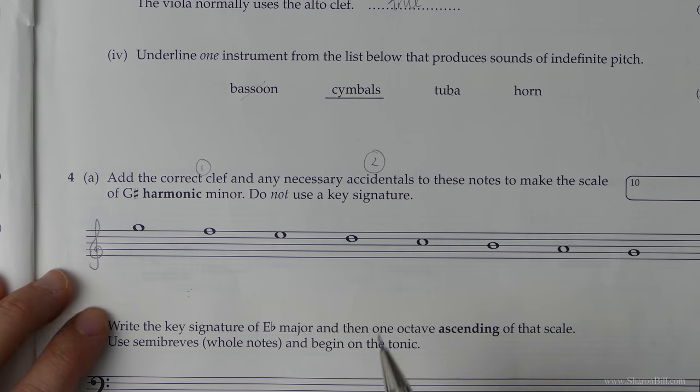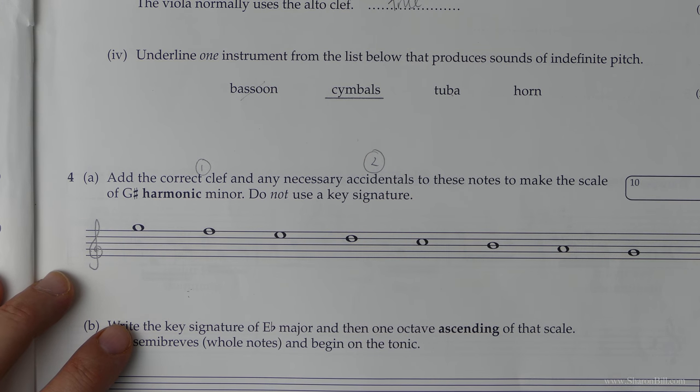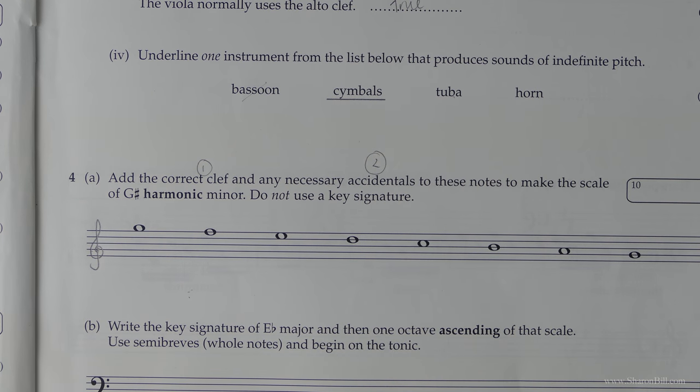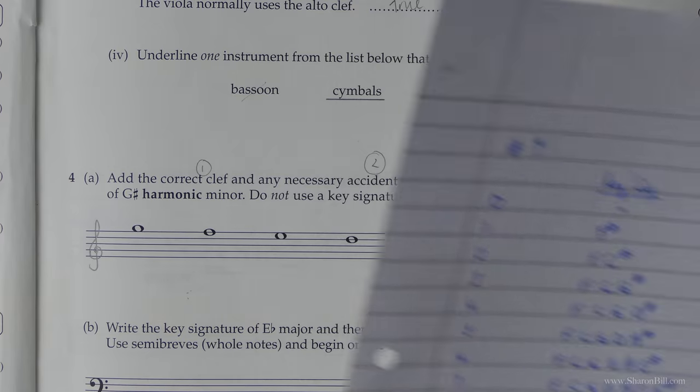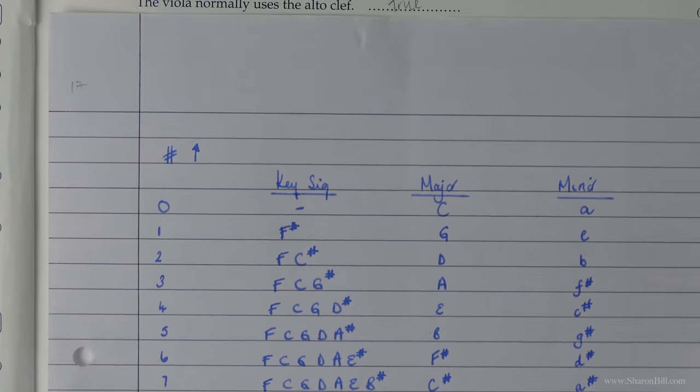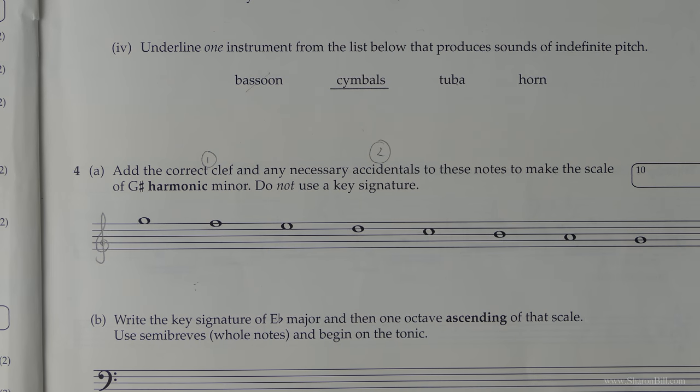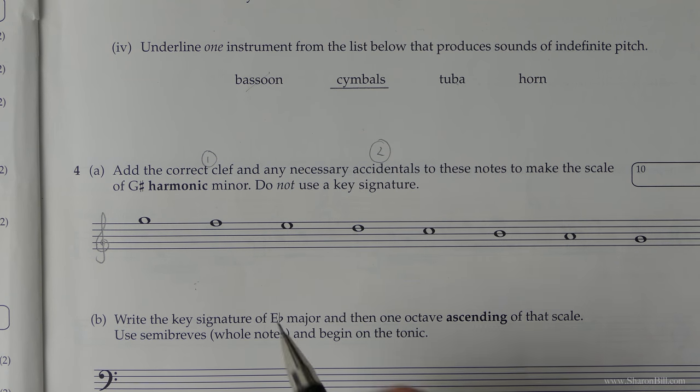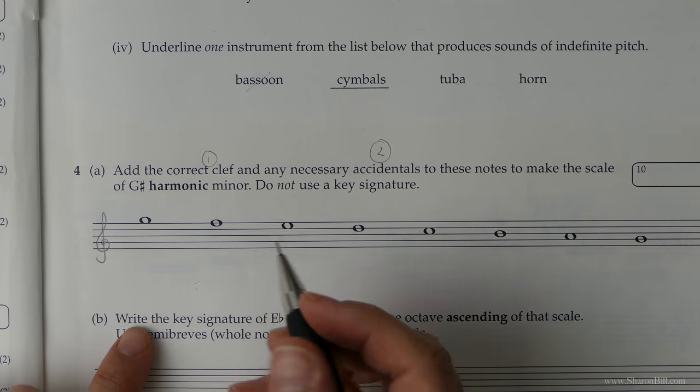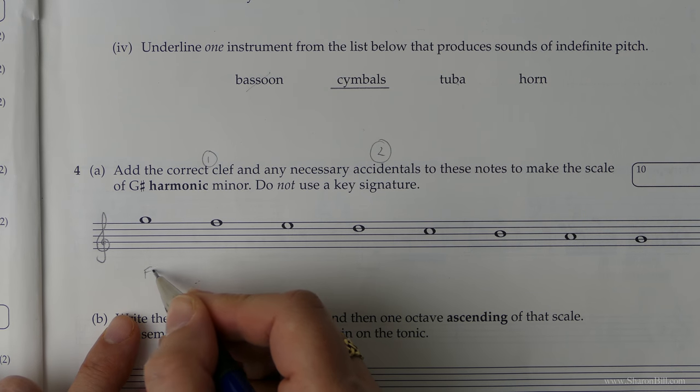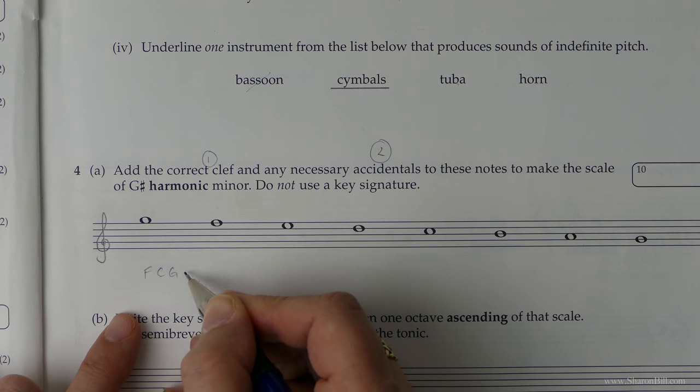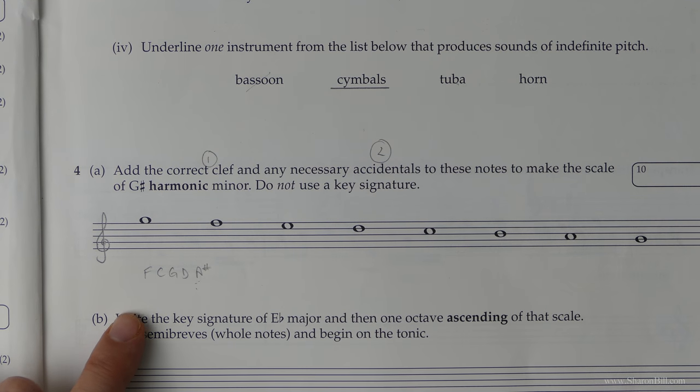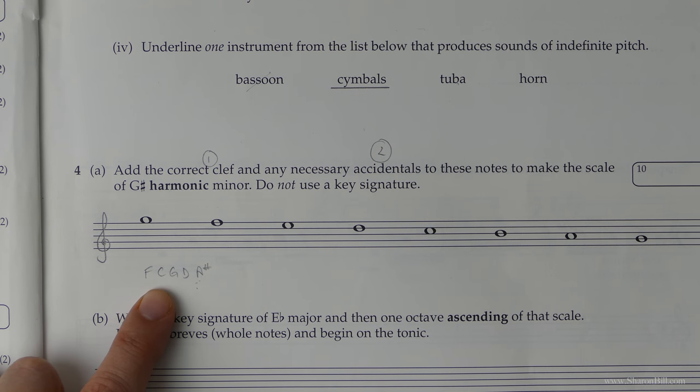Now G-sharp harmonic minor is related to B major. And if you've already worked out your list, your circle of fifths, you've already done that thinking. I would do that right at the very start. Best think about it once. And then you can just keep referring back to it. So we know it's got a key signature of F, C, G, D, A sharp. That's our related key. So let's do that first of all. Let's take it a step at a time.